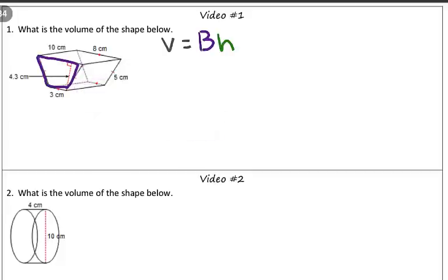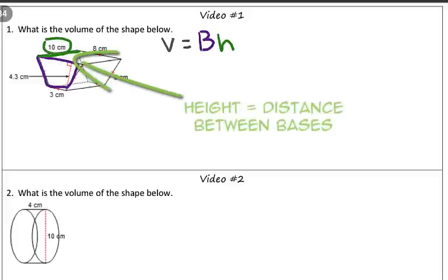Also, when determining the height of the prism, well, the height is the distance between the two bases. So, the distance between these two trapezoids is 10 centimeters. Now, we have all the information needed to solve this problem.